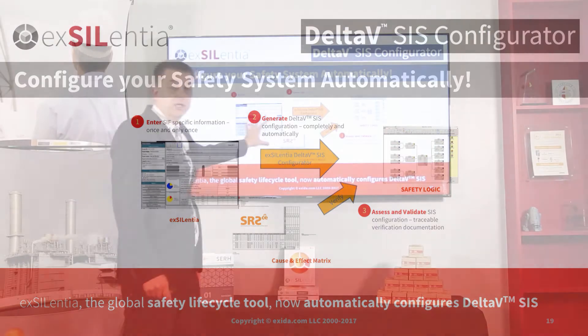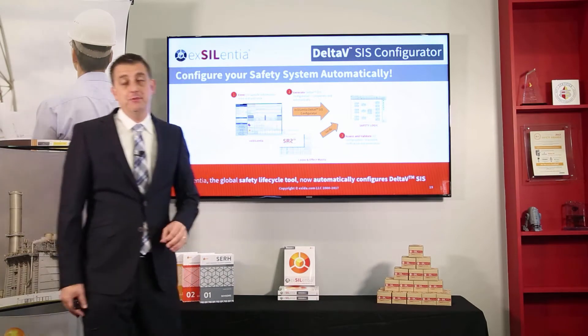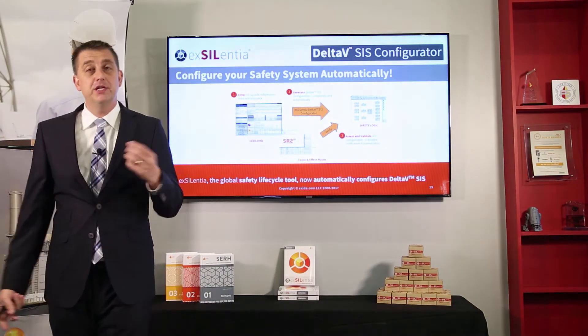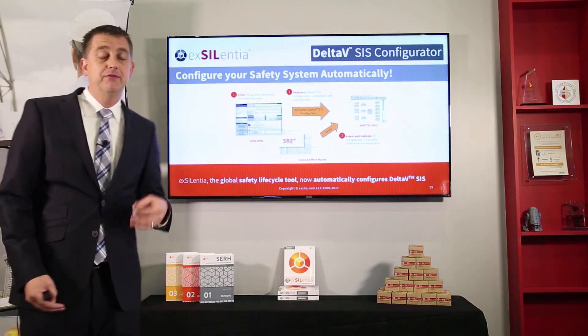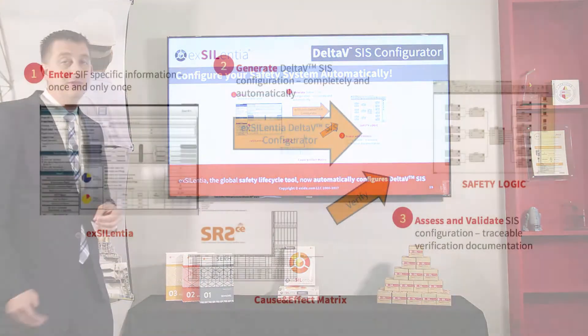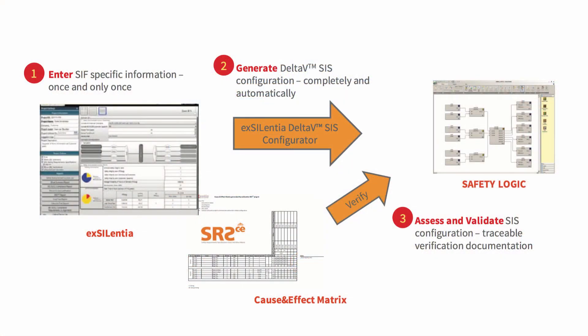In the Silver tool, you document your conceptual design. For each safety instrumented function, you document the inputs, the outputs, the voting, and so on. With that, you basically dictate what you need to program in your application program. And the utility, with a click of a button, can generate that safety logic.